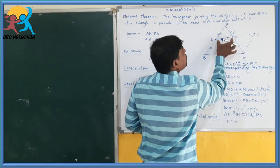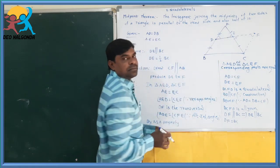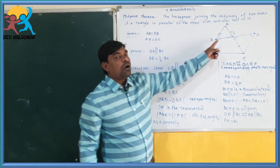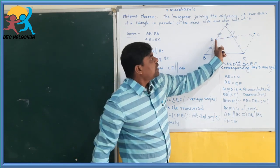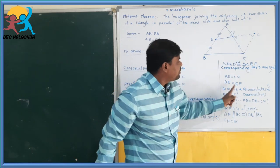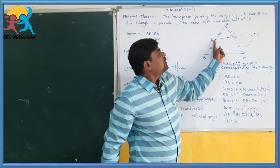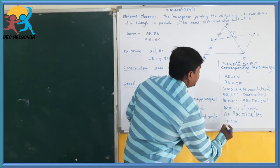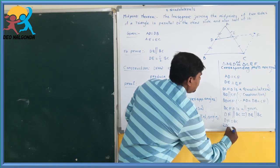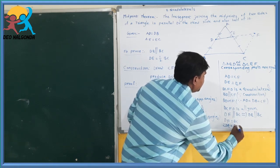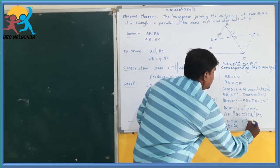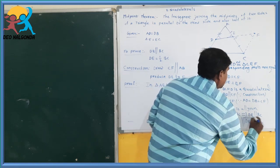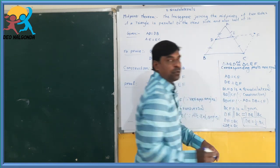DF is double of DE because DE is equal to EF. So DF equals 2DE. Since DF equals BC, we get 2DE equals BC, therefore DE equals half of BC. Like this we have proved the midpoint theorem.